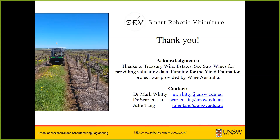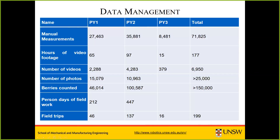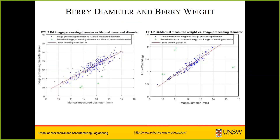For the berry weight question: the predicted berry weights have been based on the prior two years' manual measurement of berry weights. In some cases done by individual berries, but it's proved more reliable to take a bunch, count the number of berries, weigh the entire bunch, and subtract the rachis weight. A historical measure has been used to produce the berry weight. The relationship between berry diameter and weight is very close to linear, so if you can take a photo of the bunch it's quite feasible to determine berry diameter and hence berry weight.